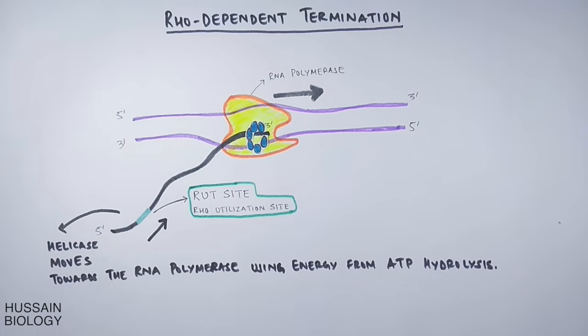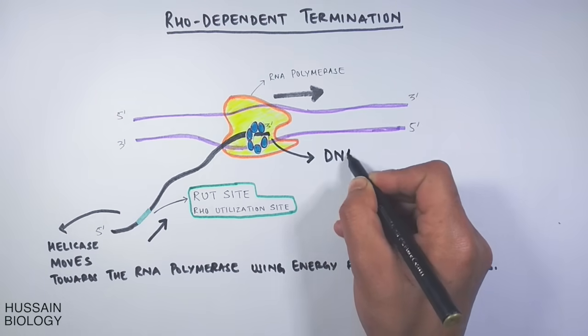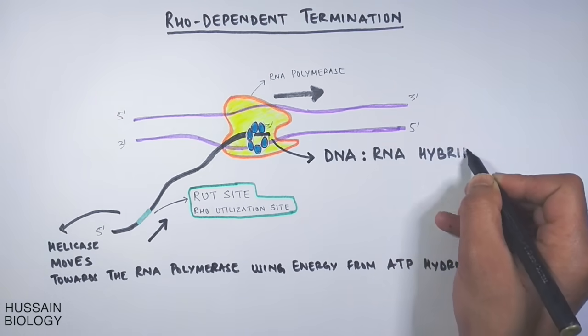When this helicase reaches the end of the RNA molecule, it encounters a DNA-RNA duplex. This being a helicase enzyme, it unwinds the duplex easily.